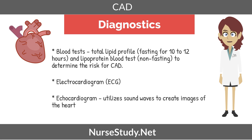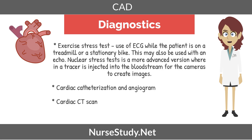Now we'll move on to diagnostics. First would be blood tests — maybe a total lipid profile, fasting for 10 to 12 hours, and lipoprotein blood tests, non-fasting, to determine the risk for CAD. We'd also be looking at an ECG and an echocardiogram to utilize sound waves to create images of the heart. Other diagnostics would include an exercise stress test, which uses an EKG or ECG while the patient is on a treadmill or stationary bike, and may also be used with an echo. A nuclear stress test is a more advanced version where a tracer is injected into the bloodstream for the cameras to create images. You could also see a cardiac catheterization, an angiogram, and even a cardiac CT scan.